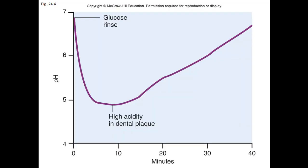Looking at the image, you can see the red inflamed gums and the loss of the gum line — the receding gum line with the teeth. With a glucose rinse, you can watch how the pH plummets from about seven down to below five in less than 10 minutes due to the buildup of acidity from dental plaque.